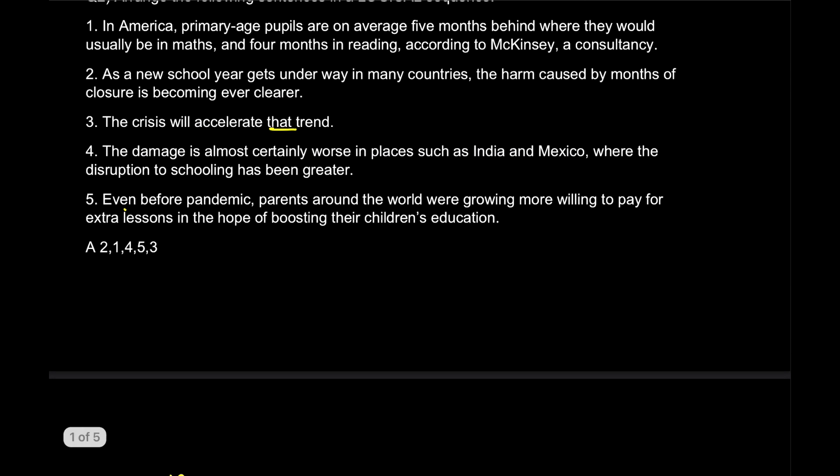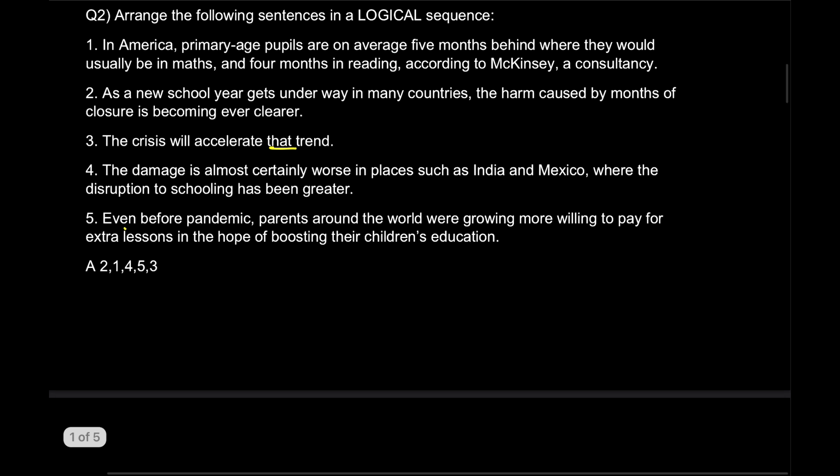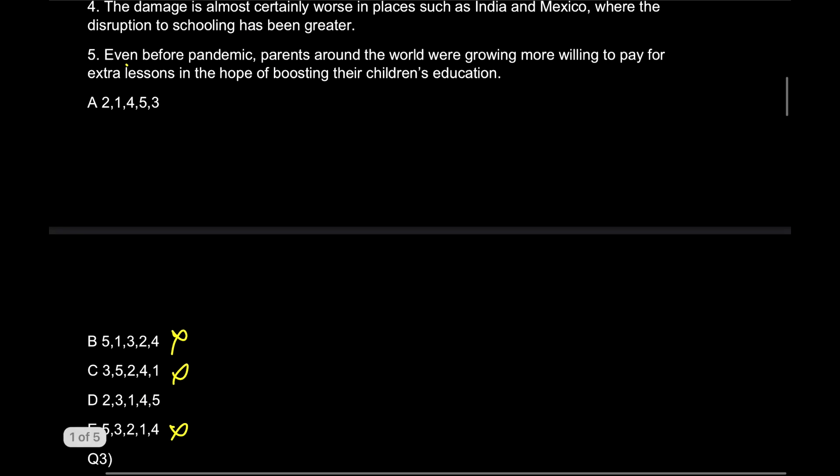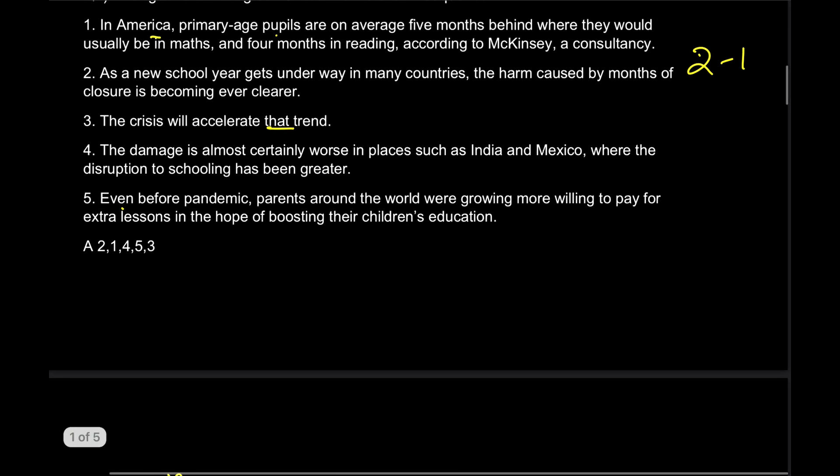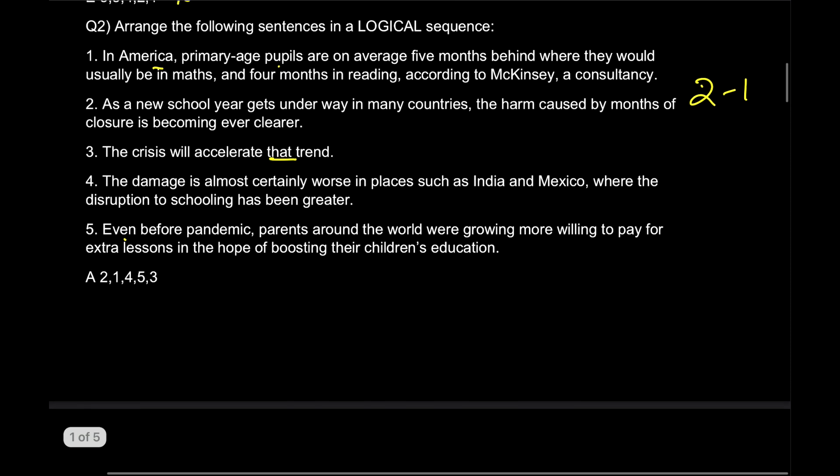Now I'm left with only two options, two and two three. So let's go to two: 'As a new school year gets underway in many countries, the harm caused by months of closure is becoming even clearer.' And where is it becoming even clearer? Logical sequence - 'in America the primary age pupils are on average five months behind where they usually be in maths or reading,' according to McKinsey Consultancy. So two one looks a perfect pair to me.